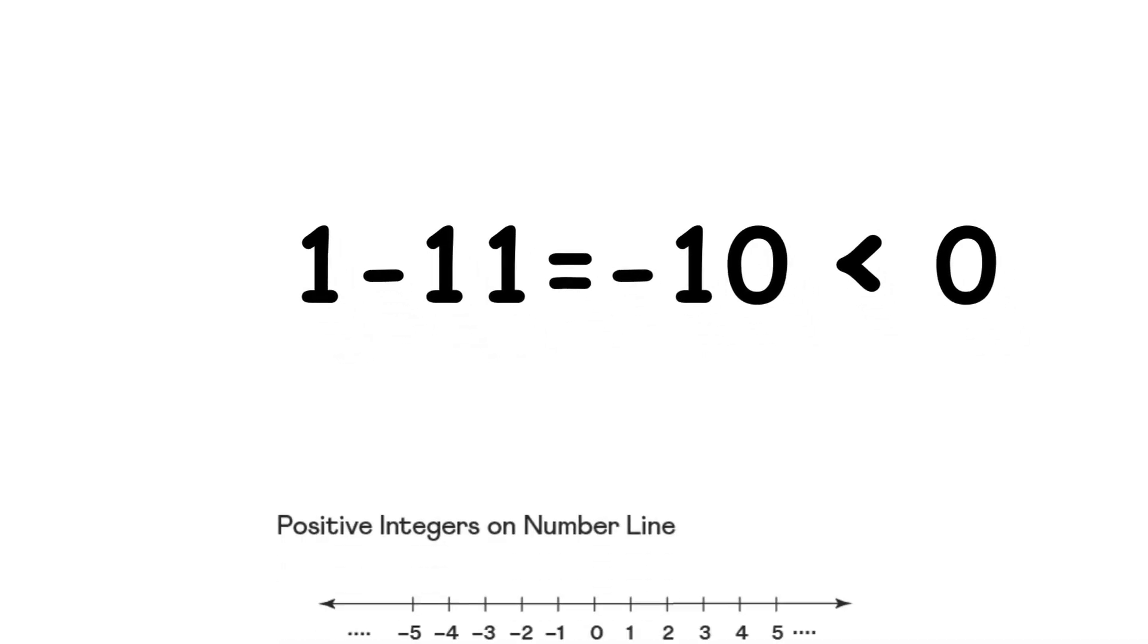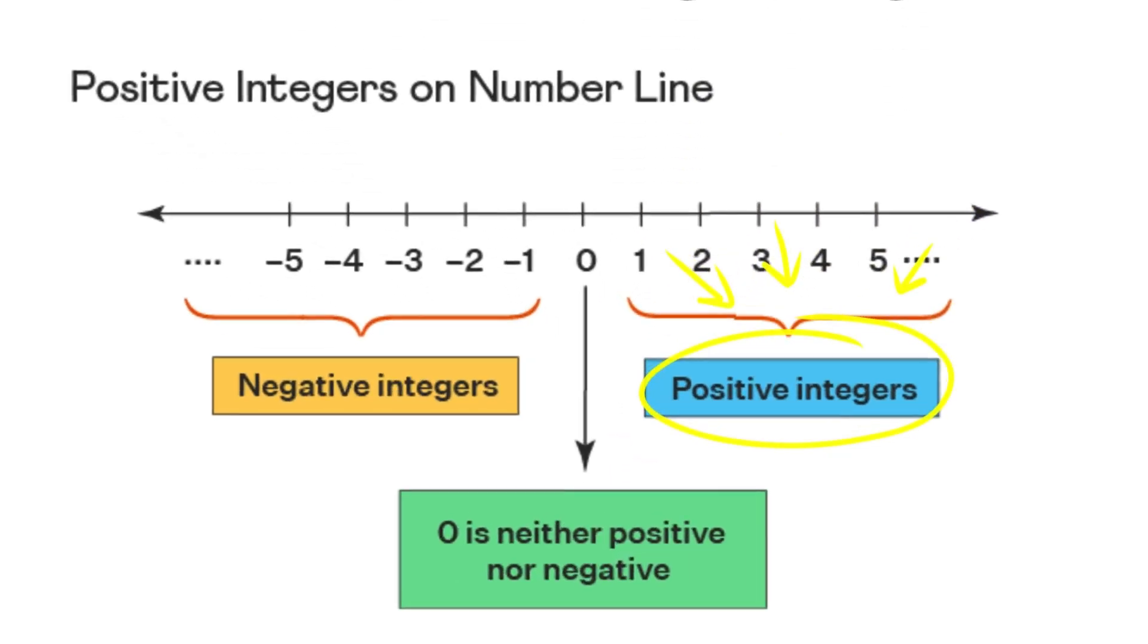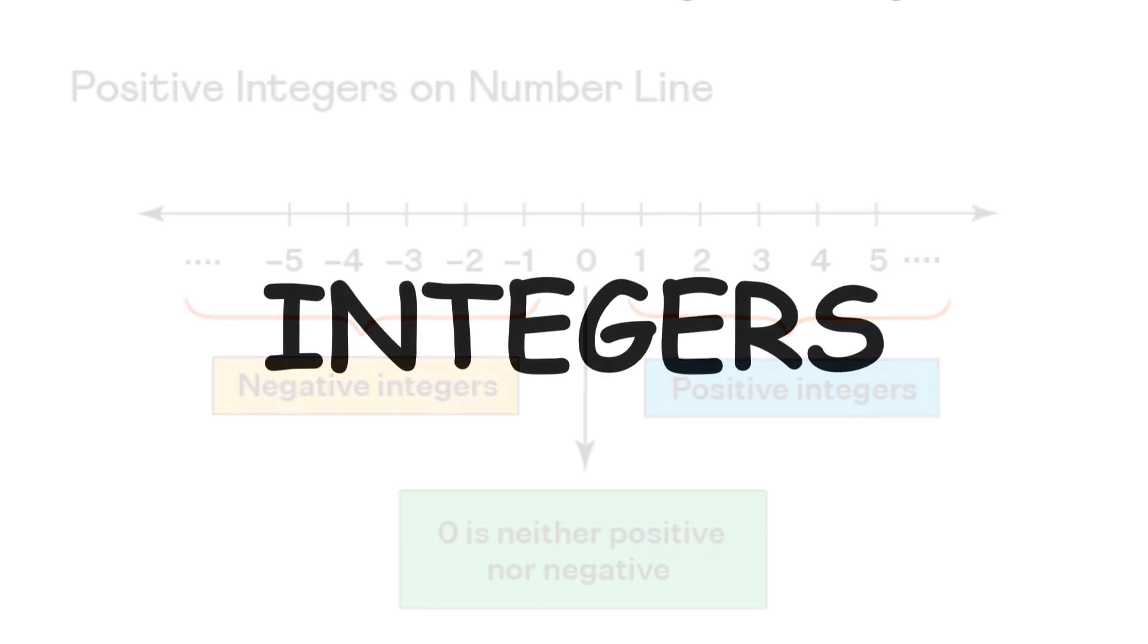This is as opposed to positive numbers, the numbers greater than zero. Every positive number has a negative version, obtained by doing zero minus that number. If you take the counting numbers, their negative versions, and zero, you get a set of numbers called the integers.